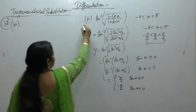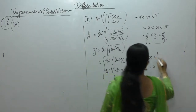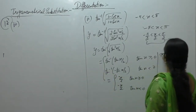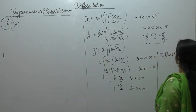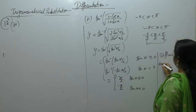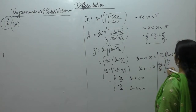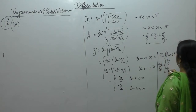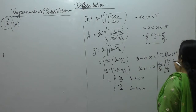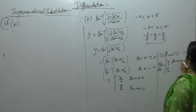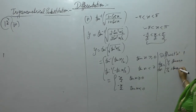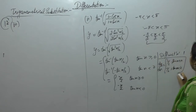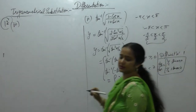Differentiating with respect to x, dy upon dx equals 1 by 2 when tan(x/2) is greater than or equal to 0, and minus 1 by 2 when tan(x/2) is less than 0.